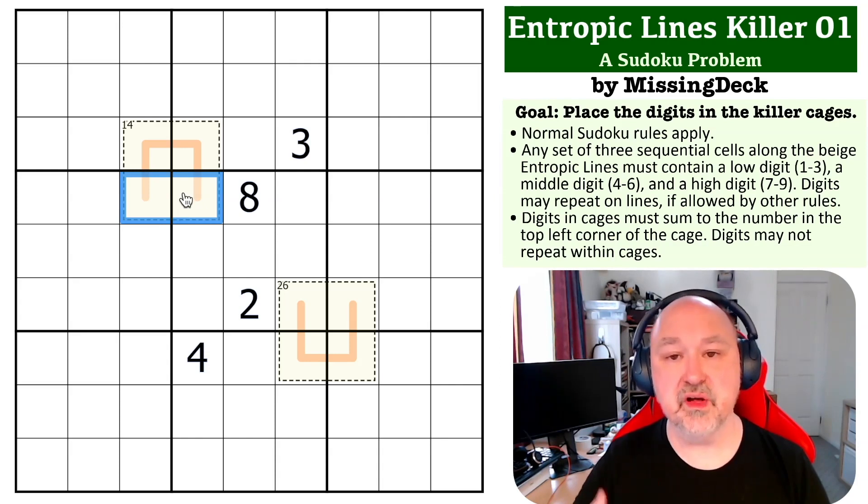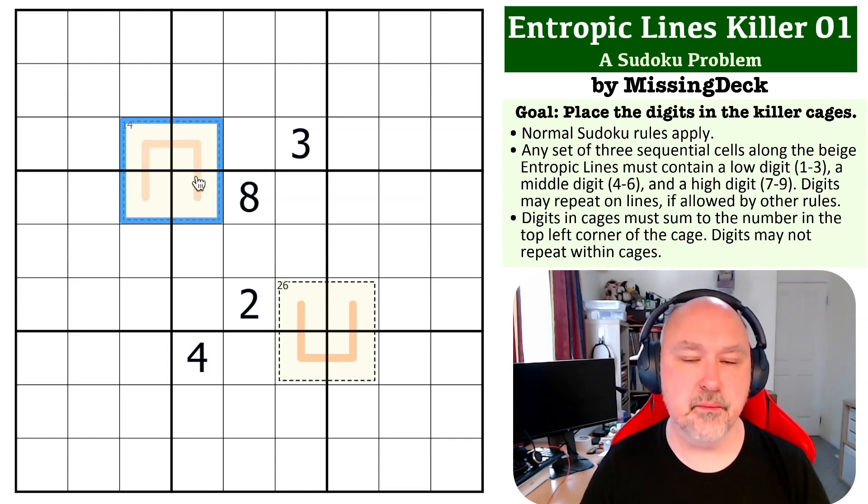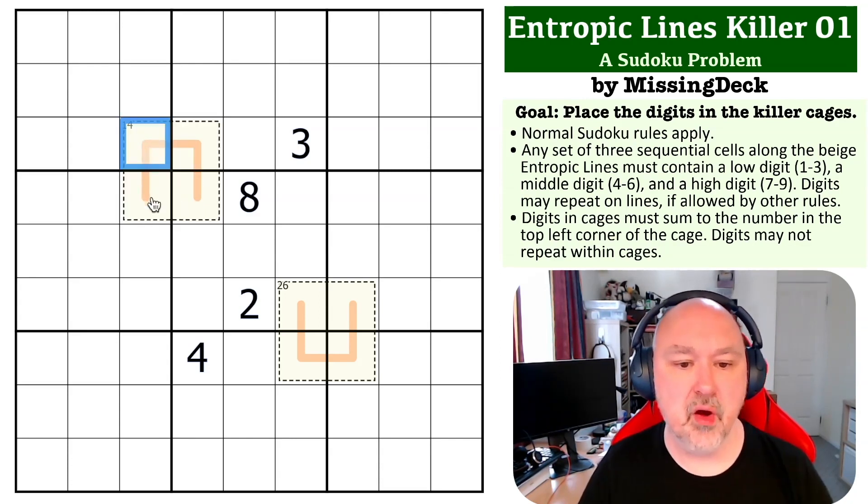And once you include a high digit, then a 7, you've already broken the total. So you cannot put two middle digits or two high digits in this. And because of the way the line works, this digit must be the same as this digit.